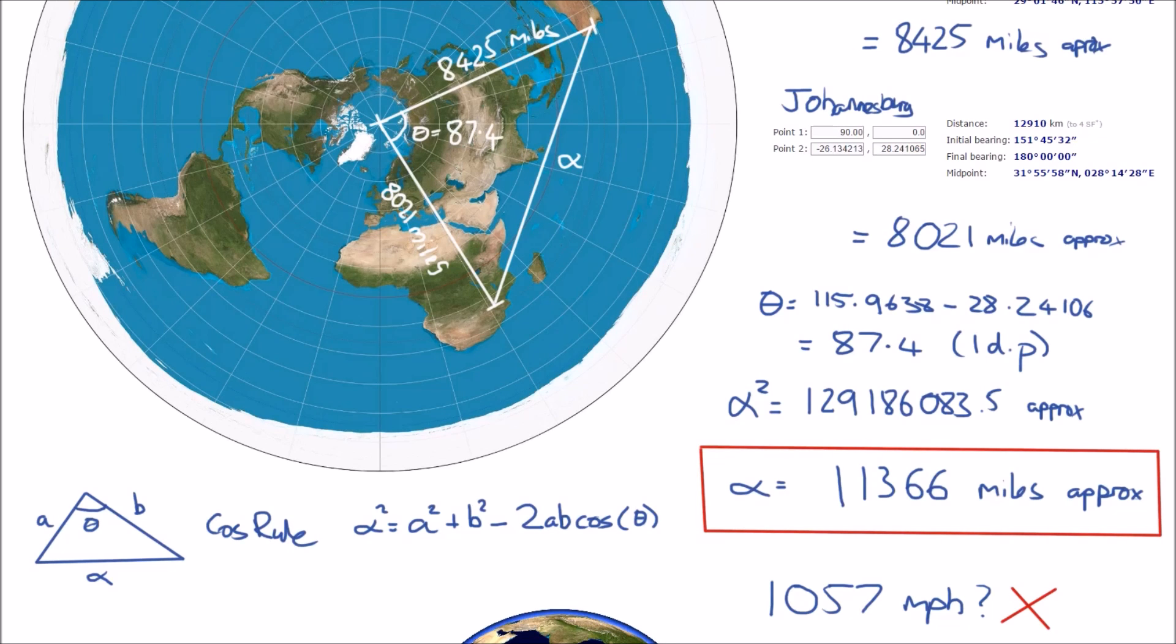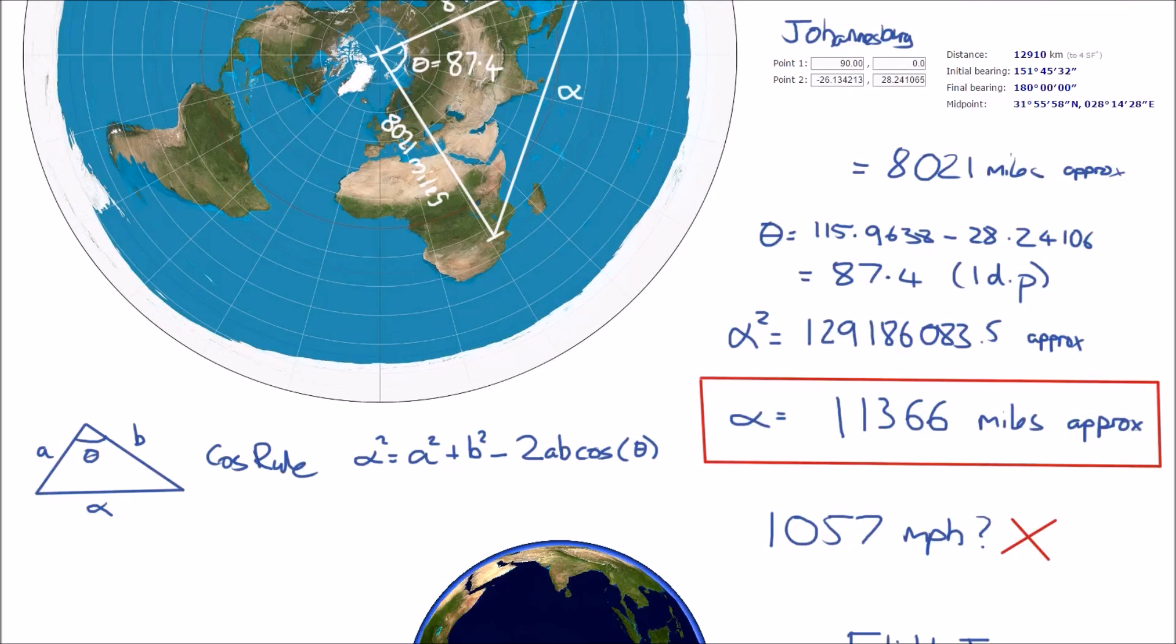Furthermore, the distance cannot be 11,366 miles because we know this aircraft flies direct, and this would mean it would have to travel at something like 1,057 miles per hour to achieve a flight time of 10 hours 45 minutes. So this is clearly and obviously nonsense, and we have shown this without any doubt.